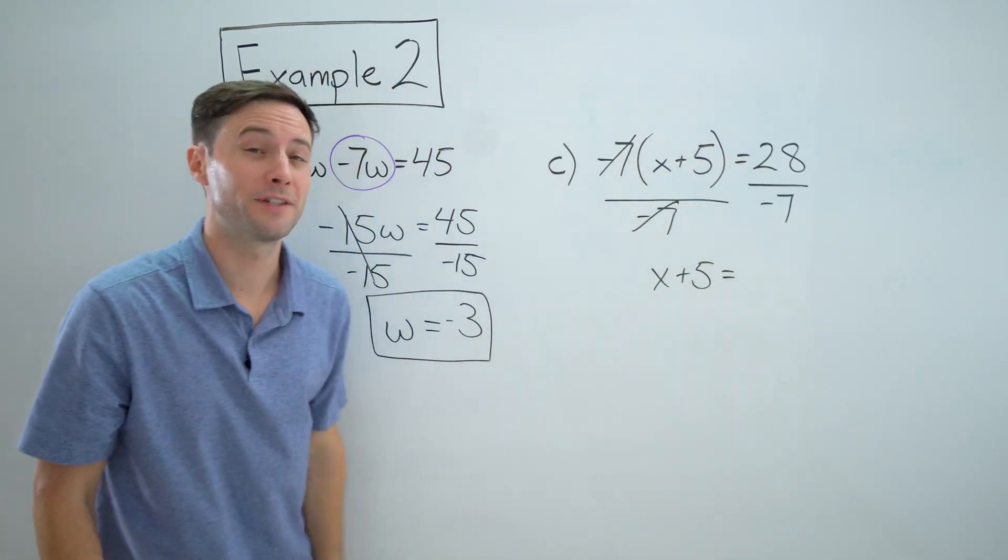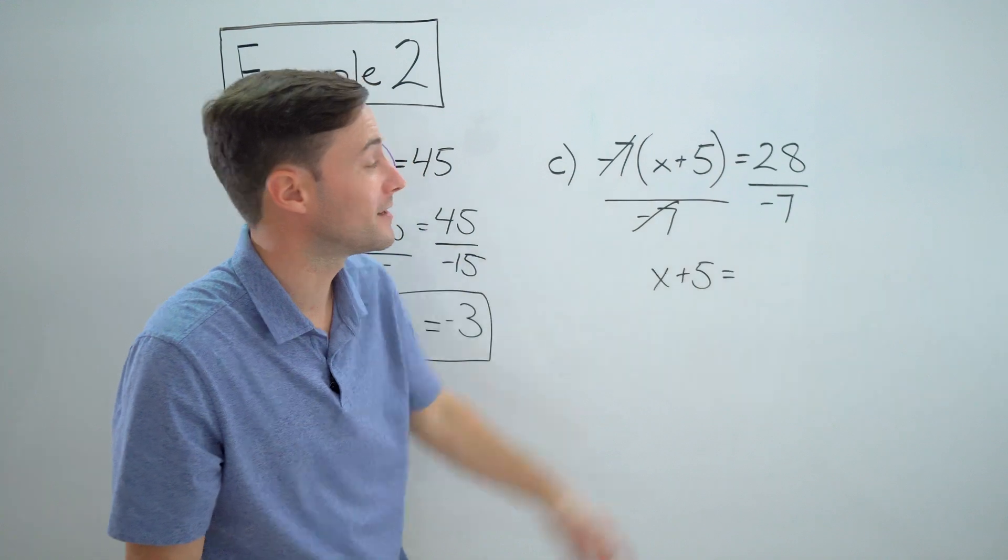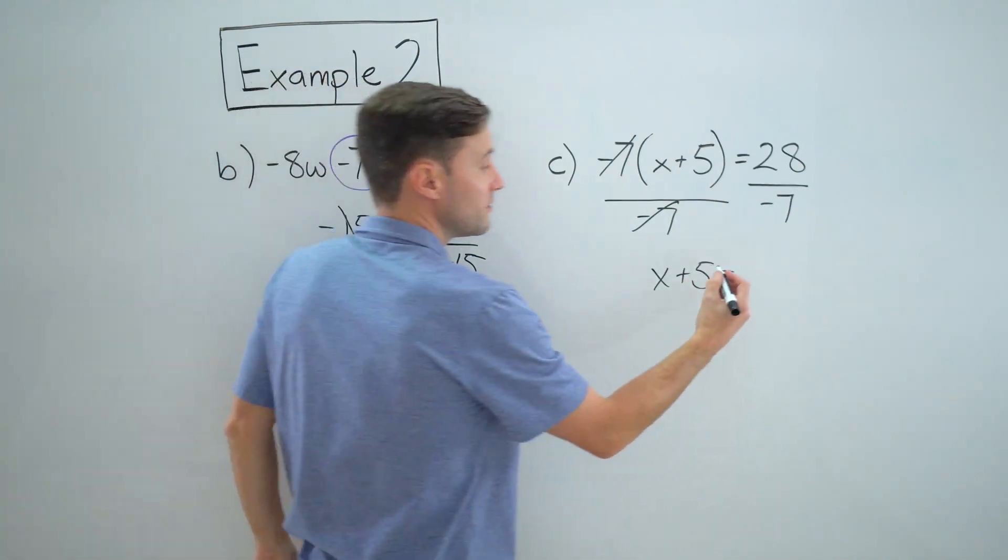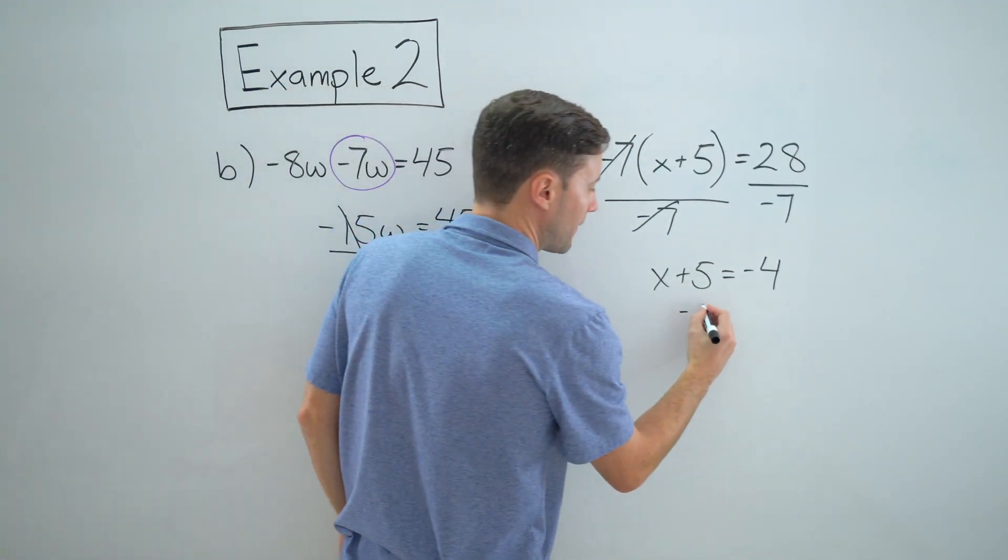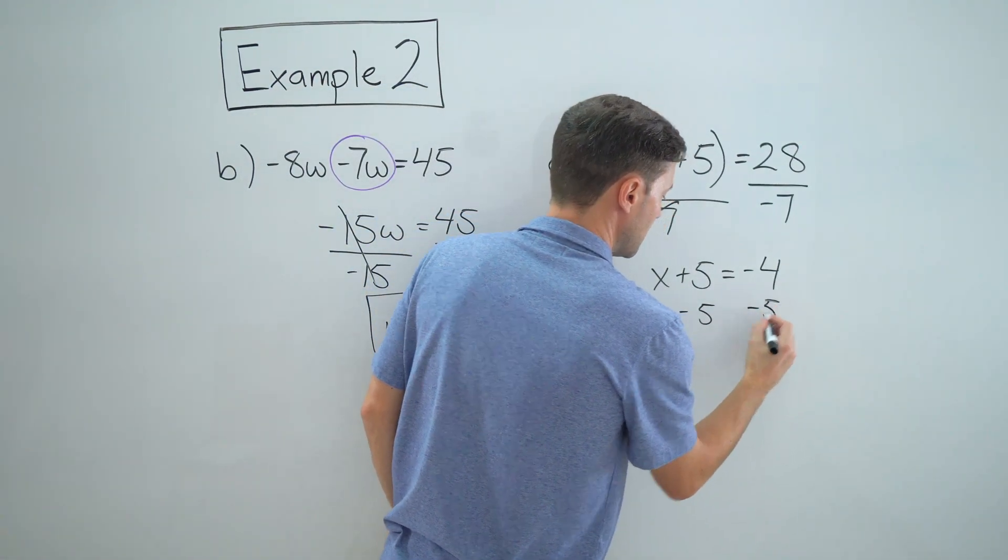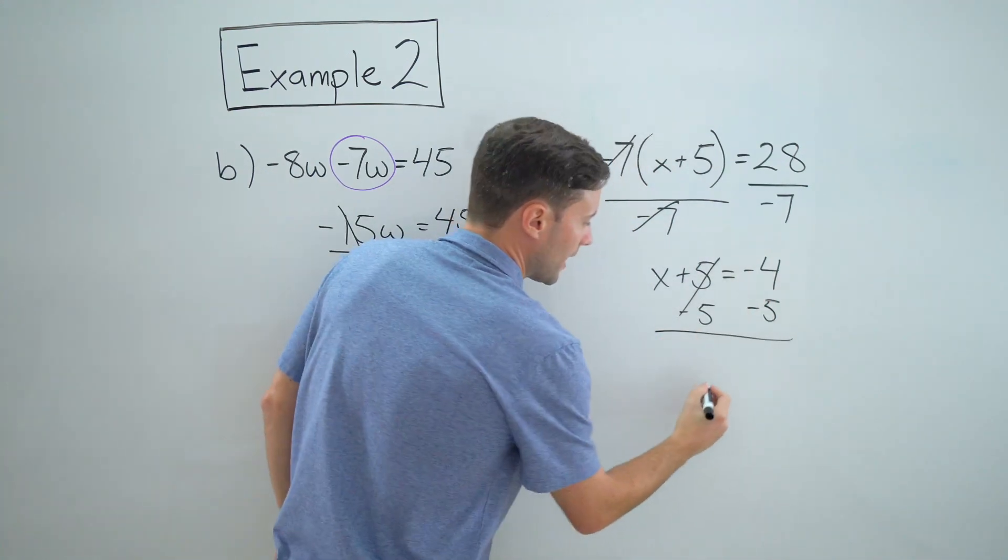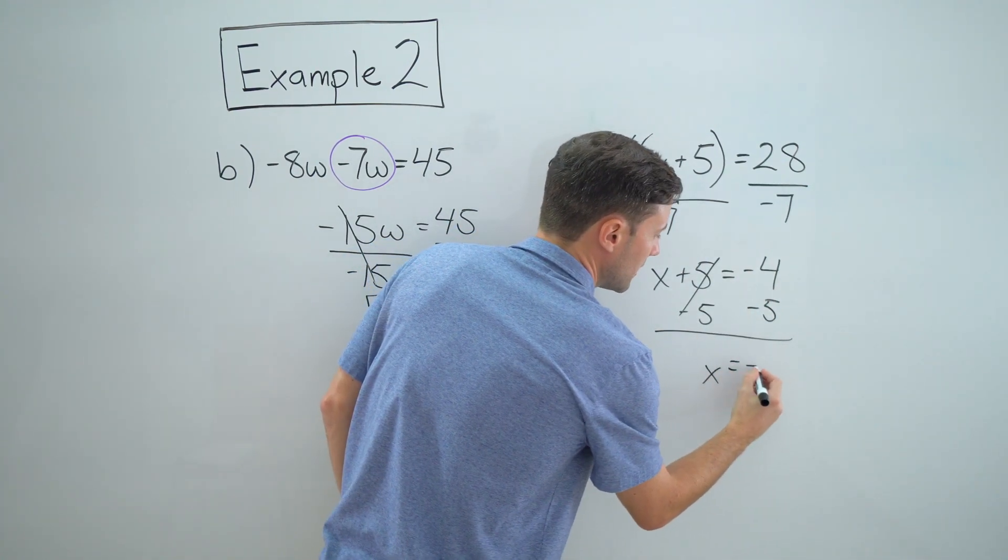And because this is divisible, it's pretty easy. 28 divided by negative seven is going to give me negative four. And then this is just one step from here, subtract five from both sides. That goes away and I just get x equals negative nine.